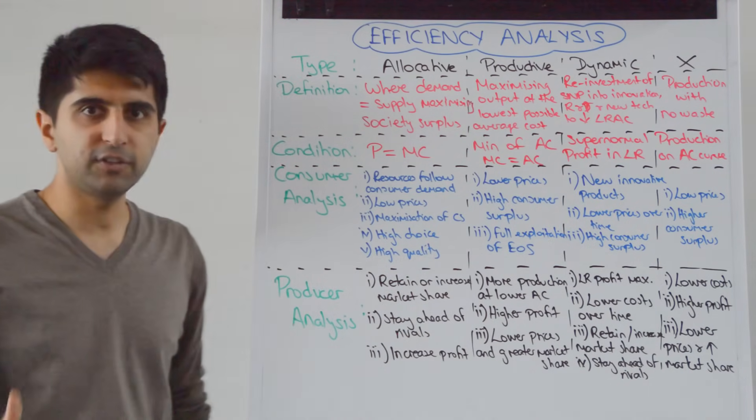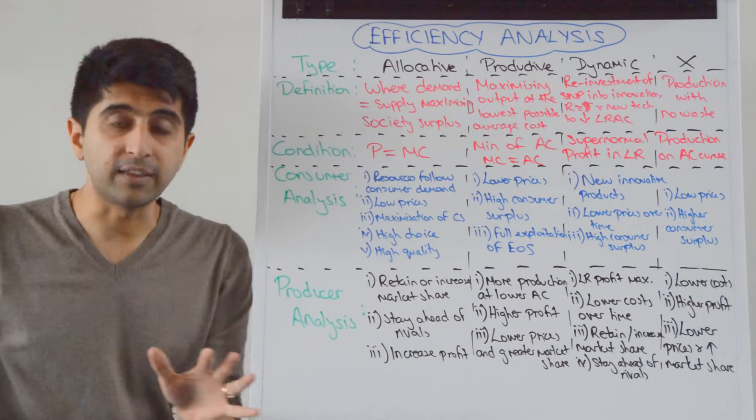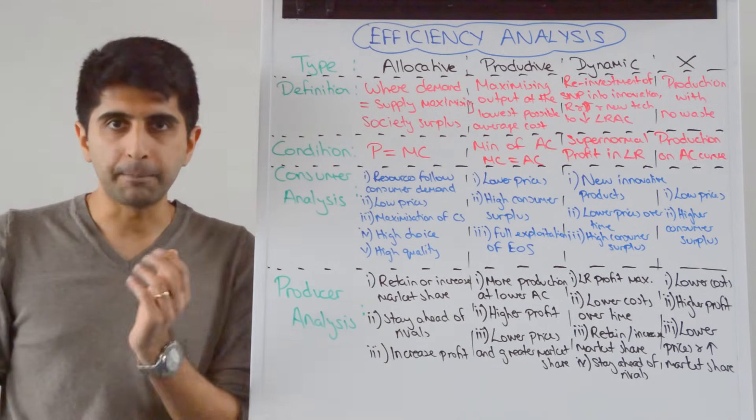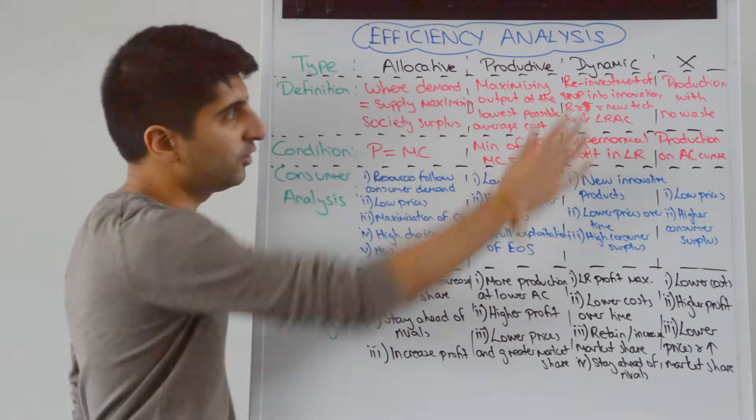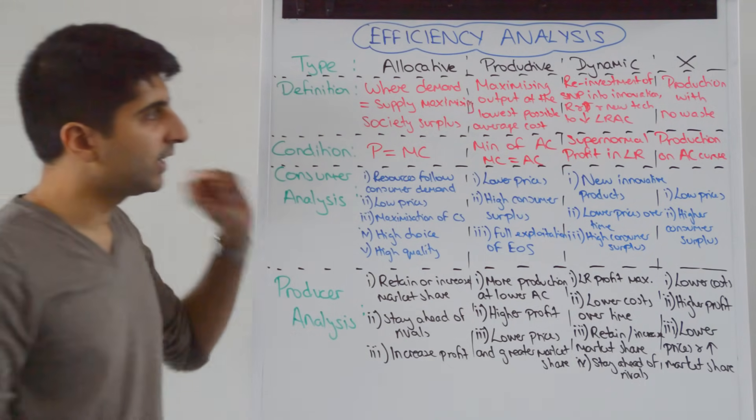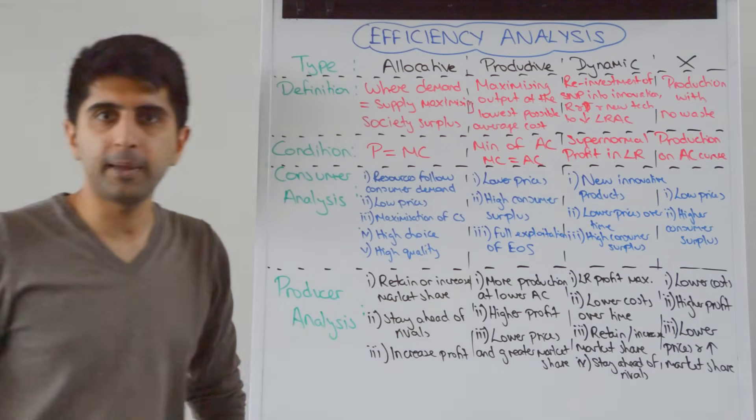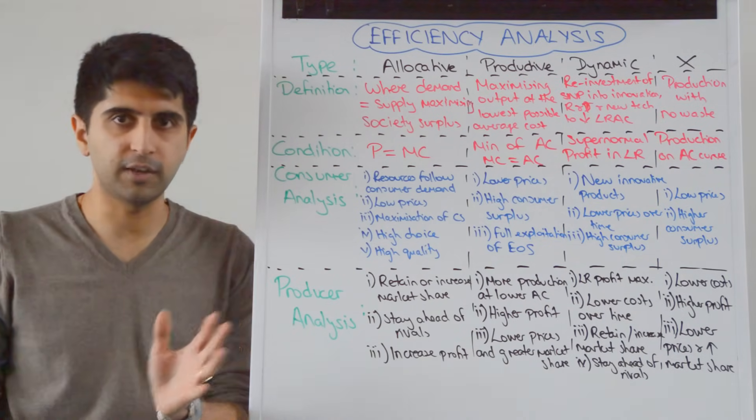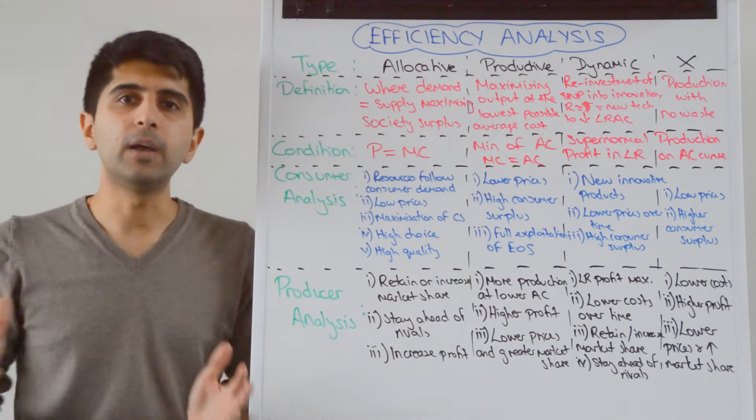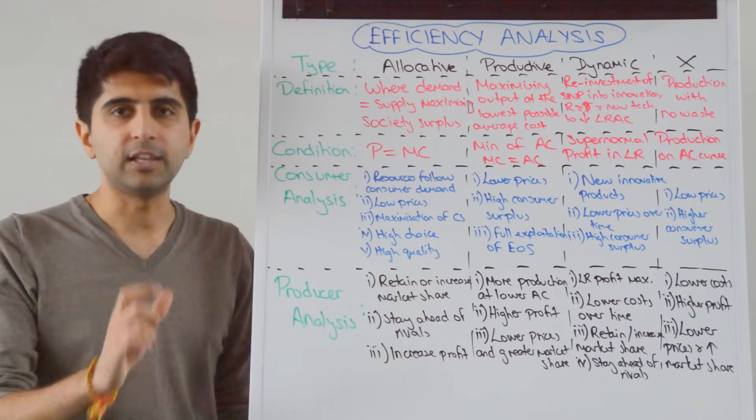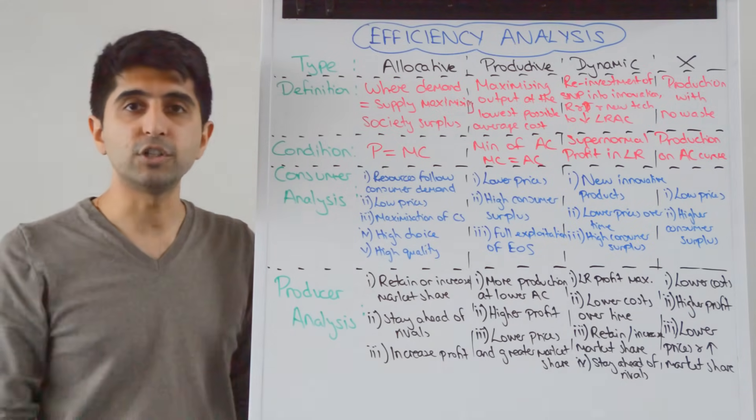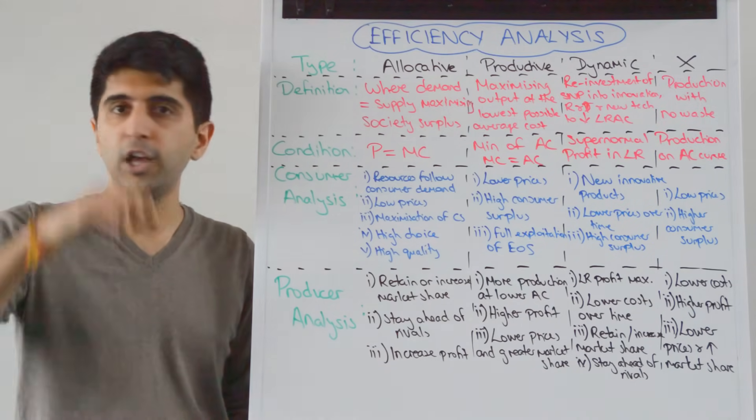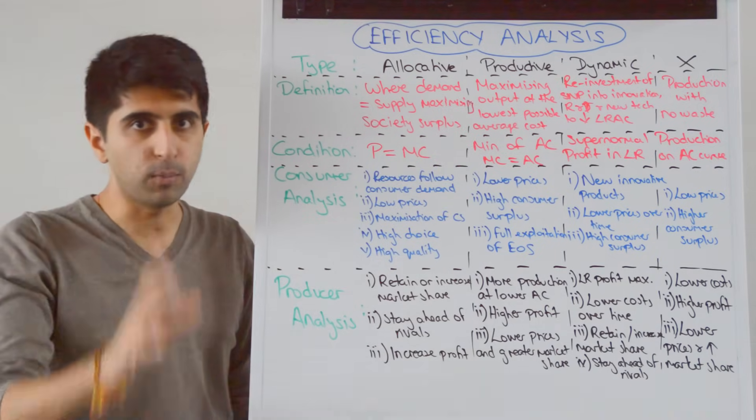X-efficiency. The definition of that is production with no waste. So no excess cost above average cost is the definition of X-efficiency. The condition is that production takes place on any point on the average cost curve. So whatever quantity a firm is producing, that quantity should be produced at the average cost line, on the average cost curve. No point above that. That would be wasteful.